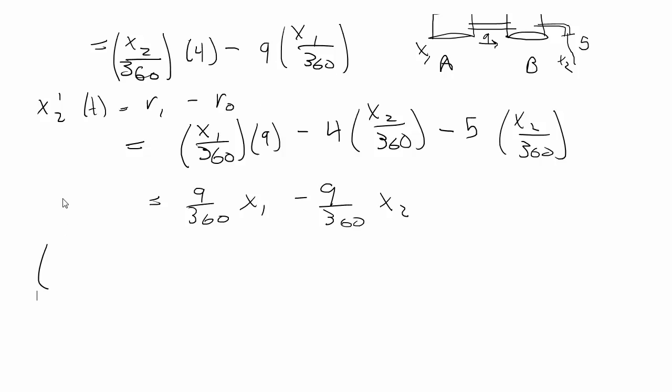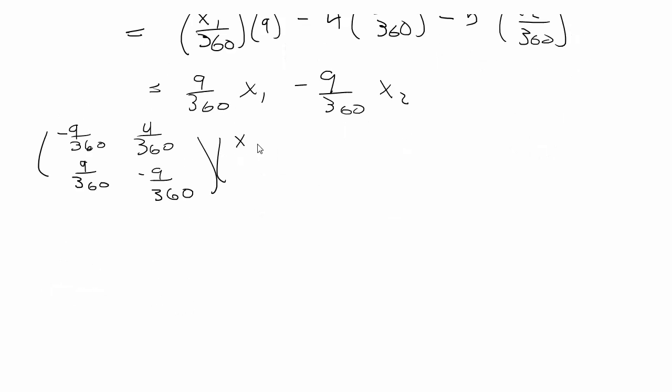so that's going to be negative 9 over 360 because we're looking at x1 first plus 4 over 360. Then we're going to do the second equation, so that's 9 over 360 minus 9 over 360. So in this case we don't have a symmetric matrix like last time. Times x1 x2 equals x prime of t.